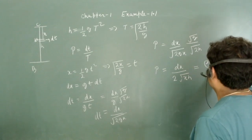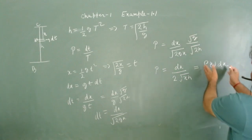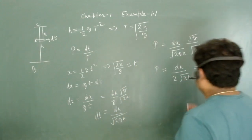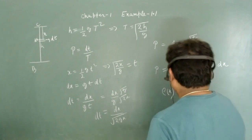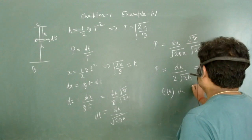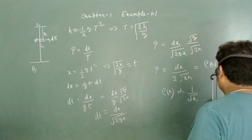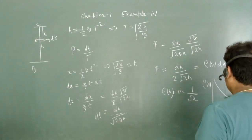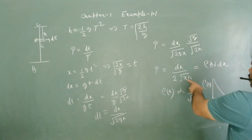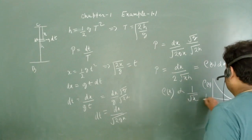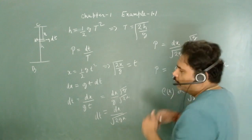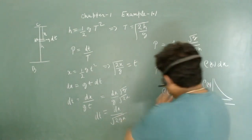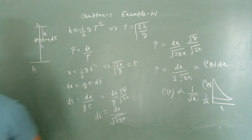Here ρ(x)dx is the probability that the particle is at distance x to x+dx. Comparing, we find that the probability density ρ(x) is proportional to 1/√x. Plotting ρ(x) versus x gives a decreasing curve. At x = h, ρ(h) = 1/(2h), and the dimension of ρ(x) is 1/length, which is correct for a one-dimensional probability density. We have now calculated the probability density.